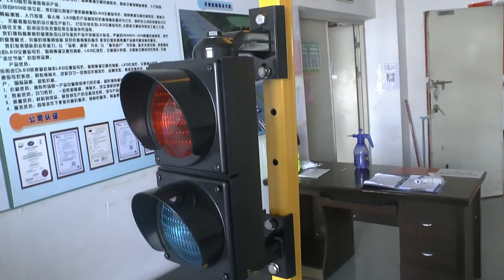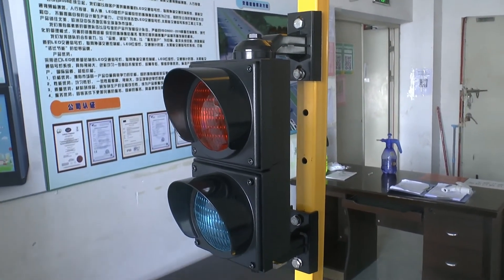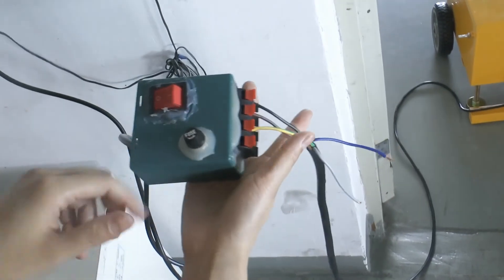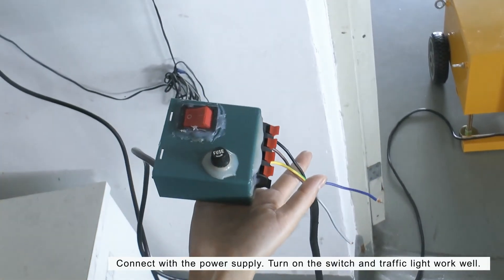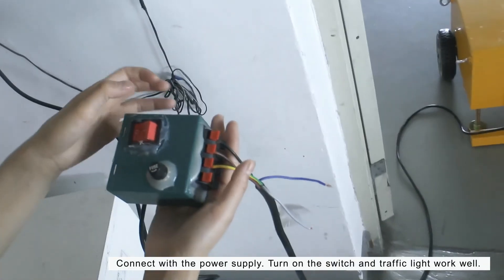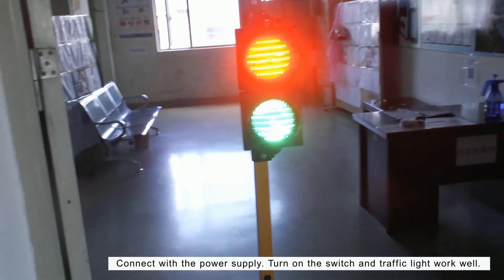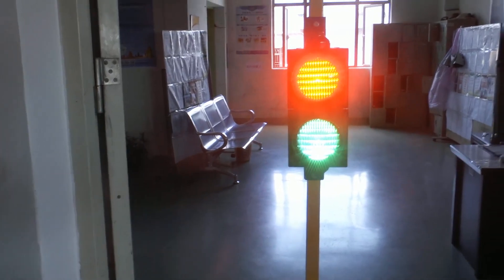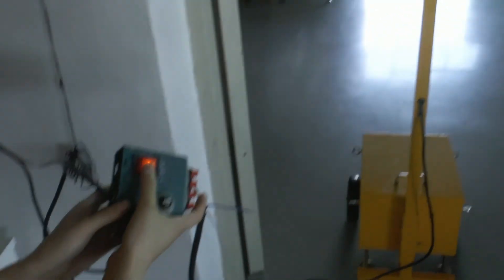Then you can install the light bulb. The traffic signal is connected with the power supply already. You just turn on the switch and the traffic light turns on, indicating that installation is correct. Turn off, traffic light off.